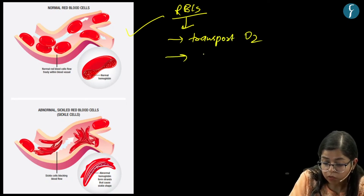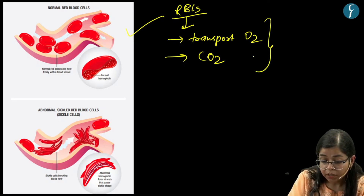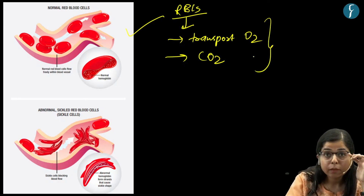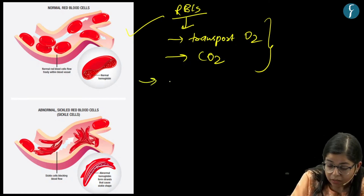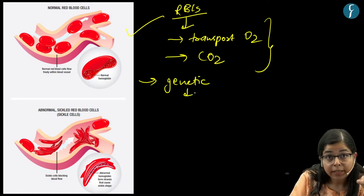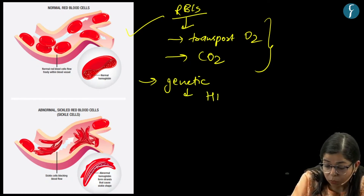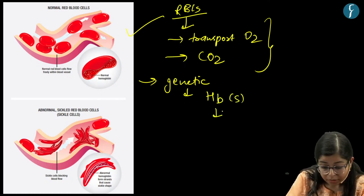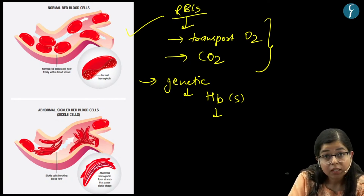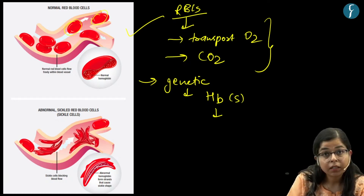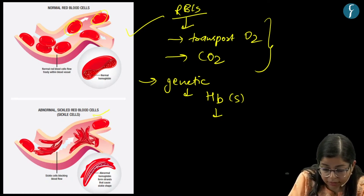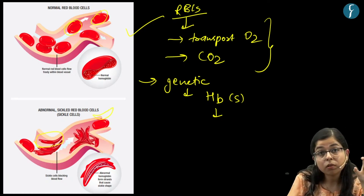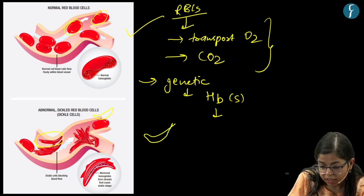RBCs also remove carbon dioxide — this is the primary work of RBCs. In a person suffering from sickle cell anemia, it is a genetic disorder in which there is an abnormality in the hemoglobin gene. Because of this, the RBCs which were originally round and flexible turn into a sickle shape — or the crescent shape of the moon.